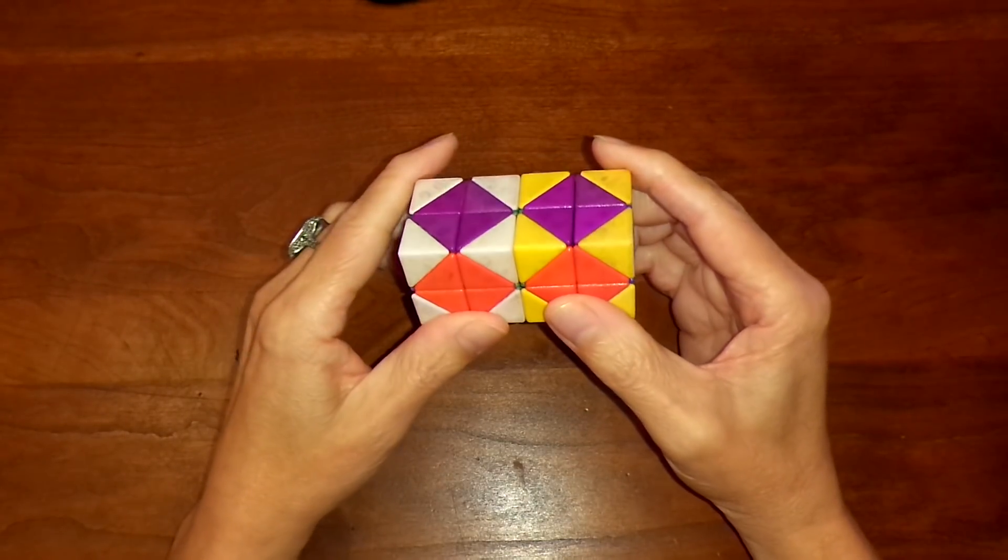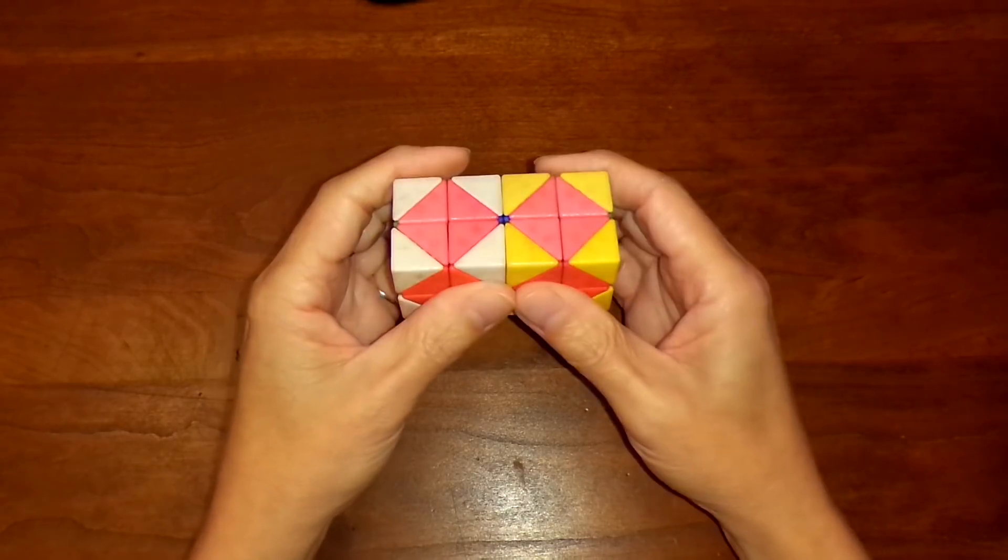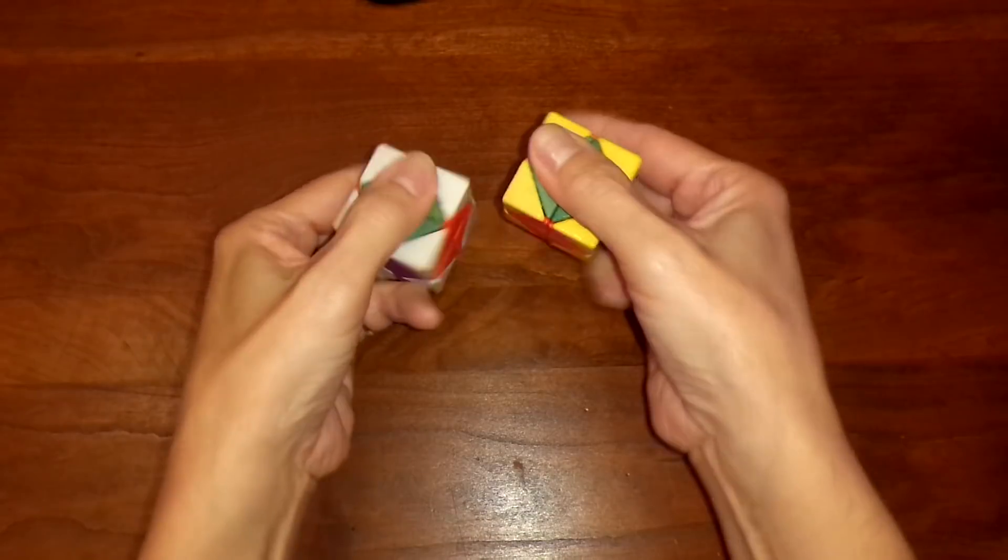The second kind of primitive move is called a rotation and you do that just by rotating the two halves of the puzzle against each other like this.